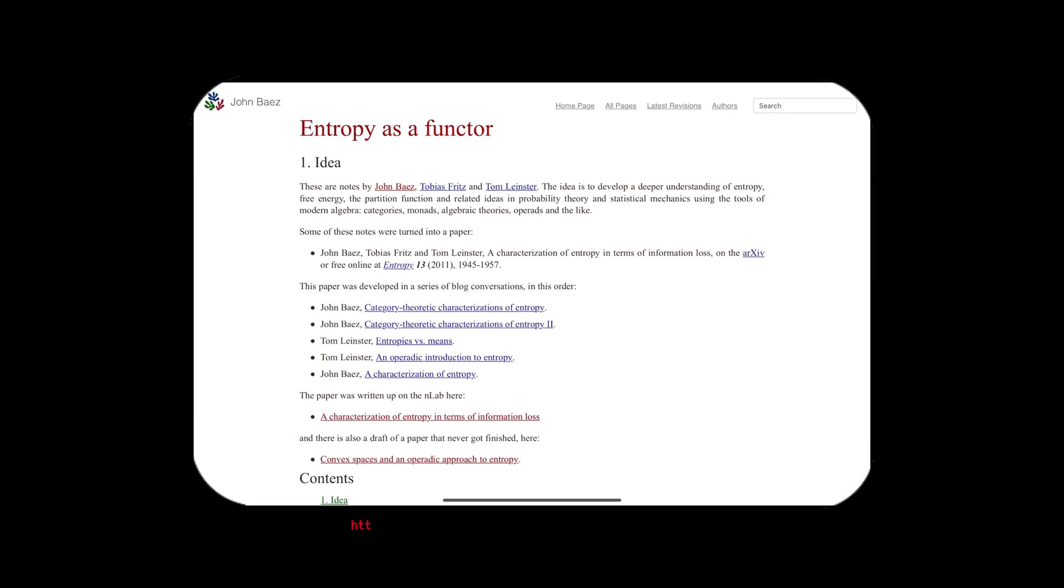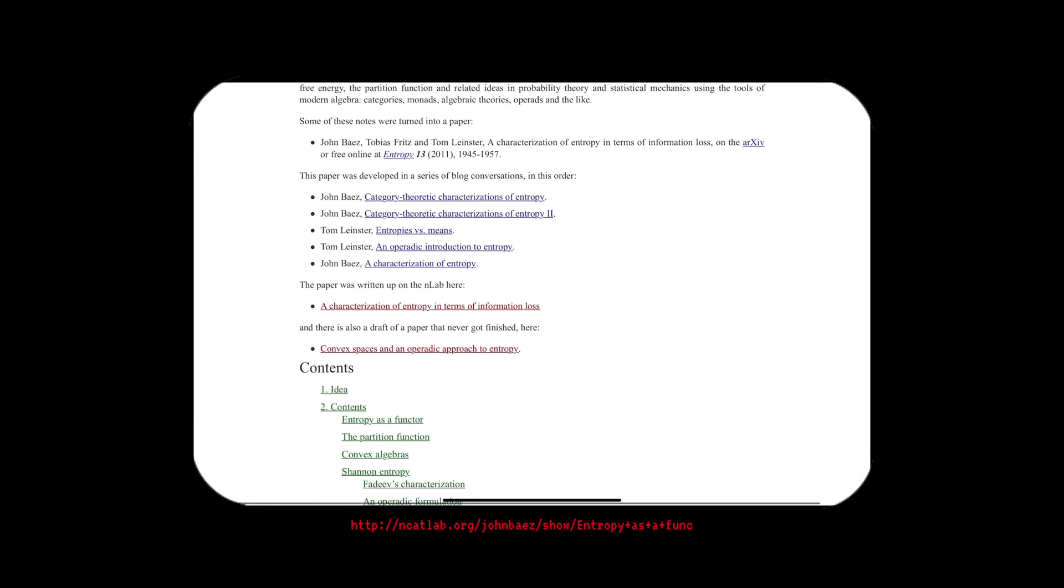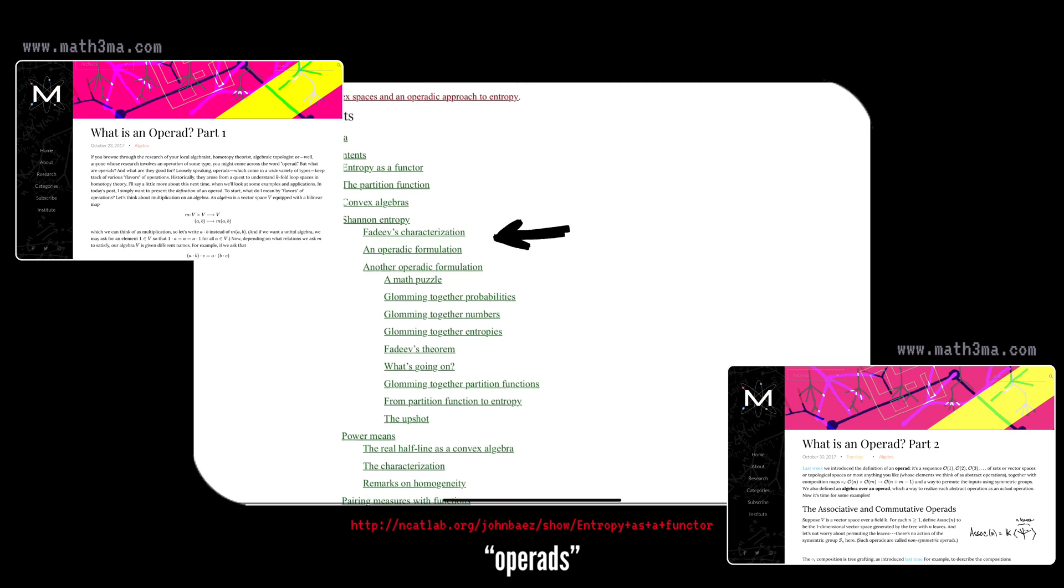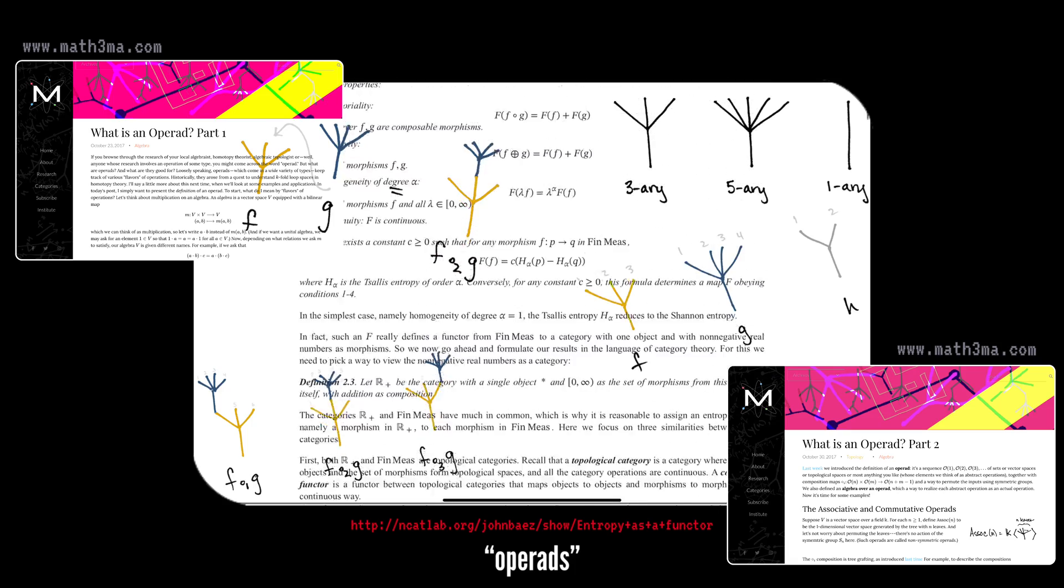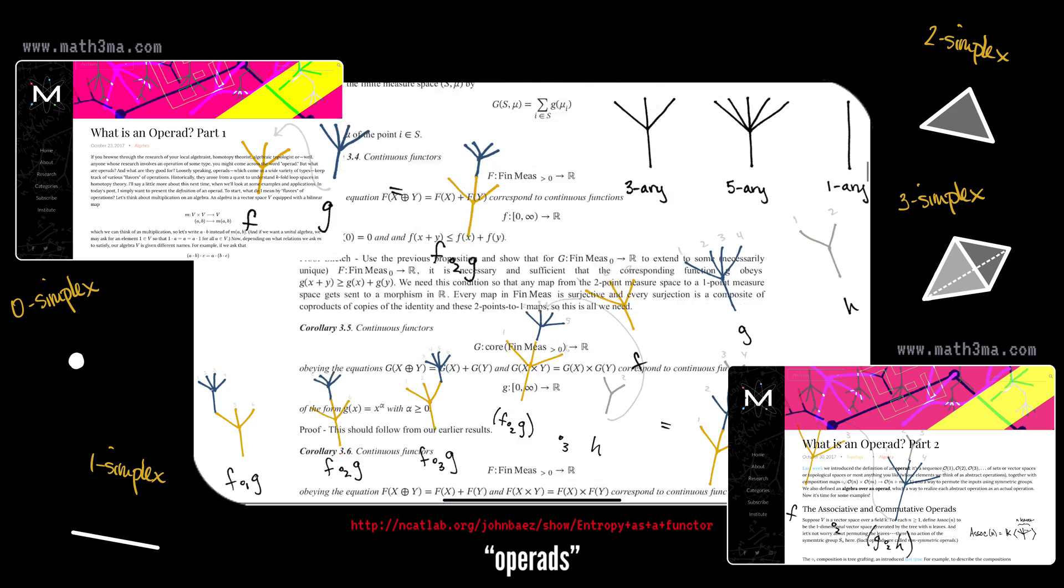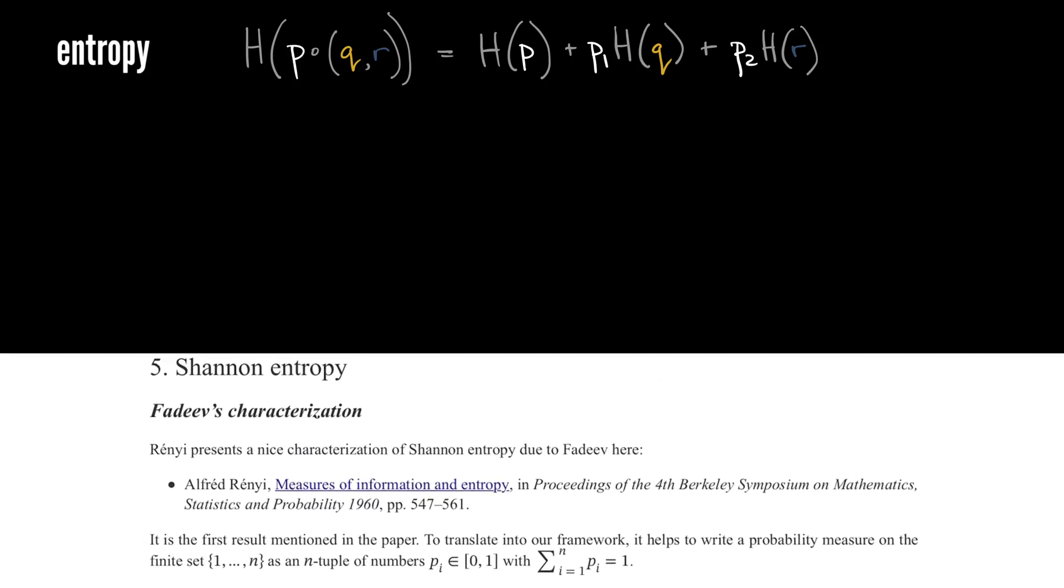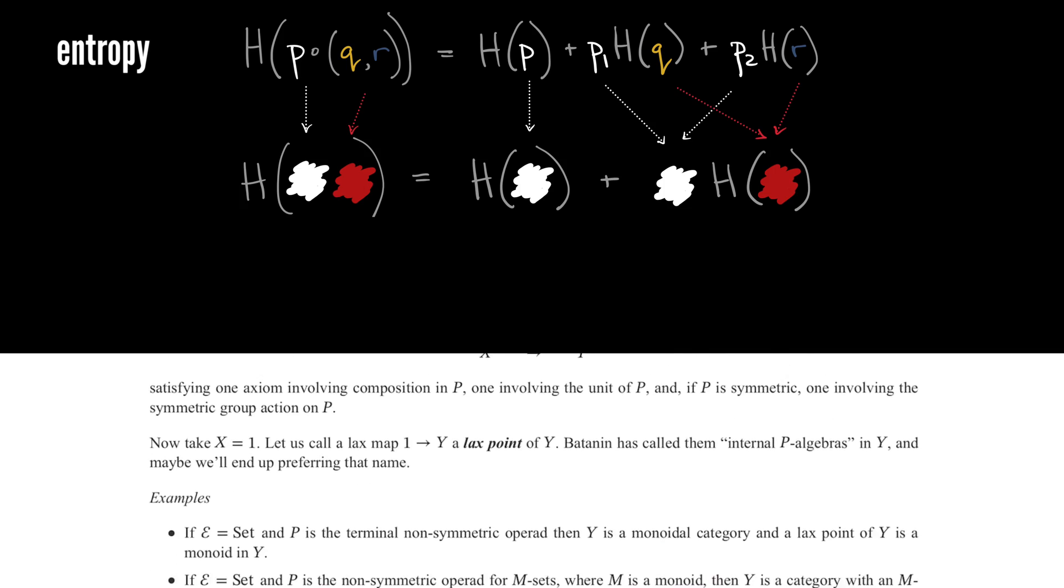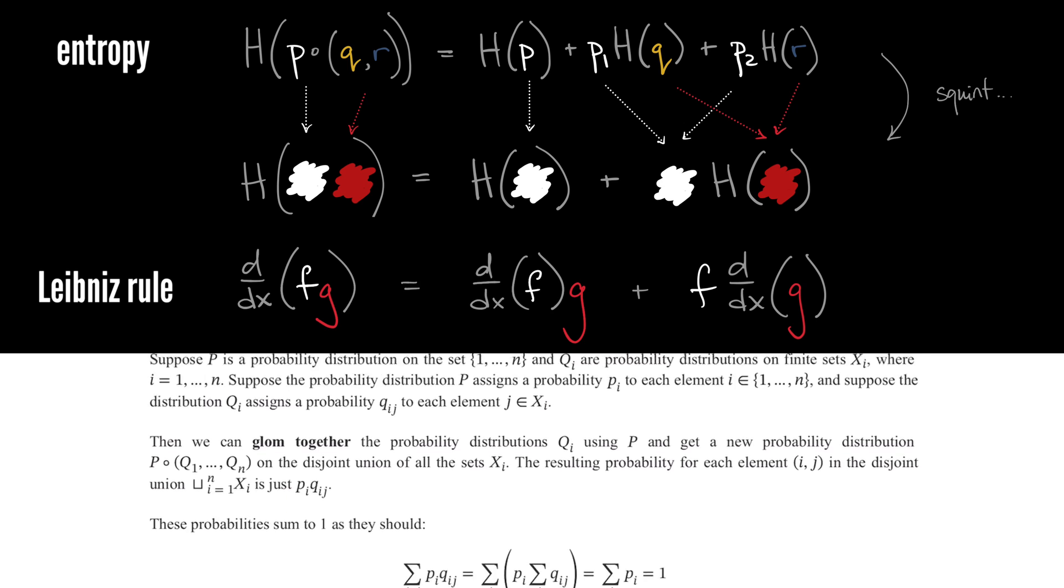Here's the punchline. The algebraic structure of probabilities finds a very nice home in the theory of something called operads, which are abstract gadgets with origins in algebraic topology. The connection between operads and probabilities was first made by Tom Leinster several years ago. And around the same time, Baez observed that the chain rule looks a lot like the product rule or the Leibniz rule from calculus, if you squint your eyes a little bit.